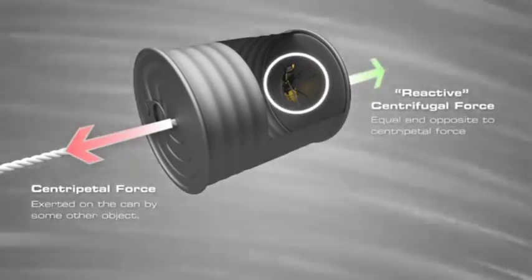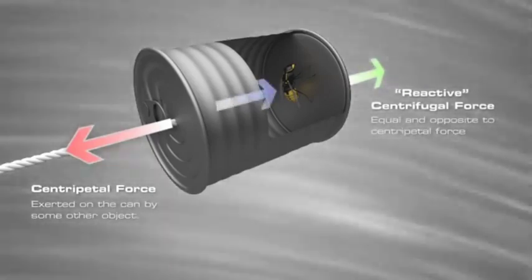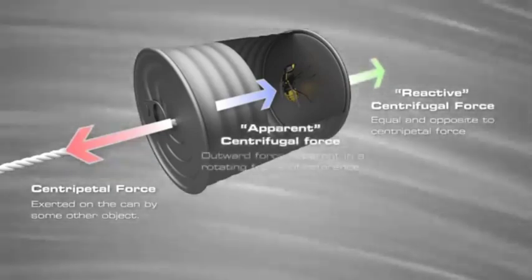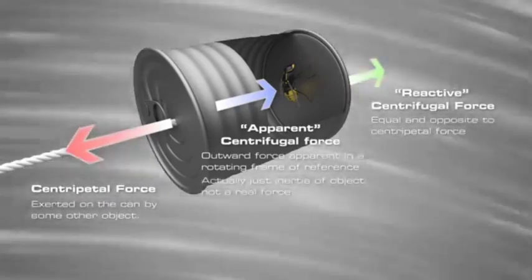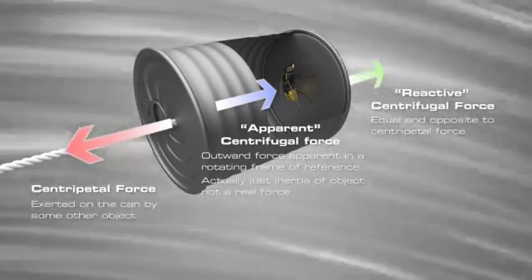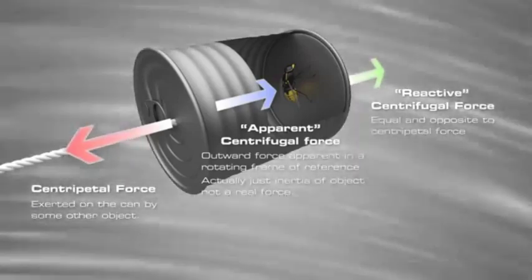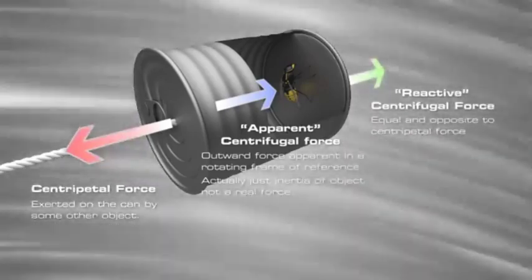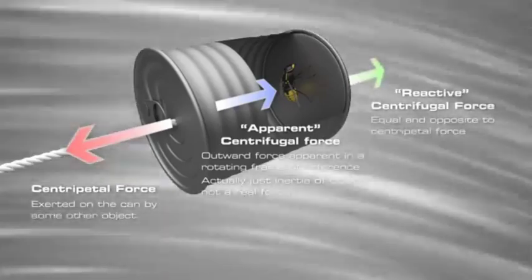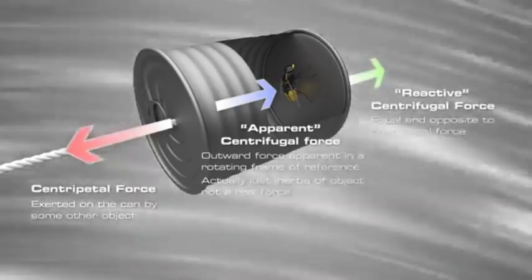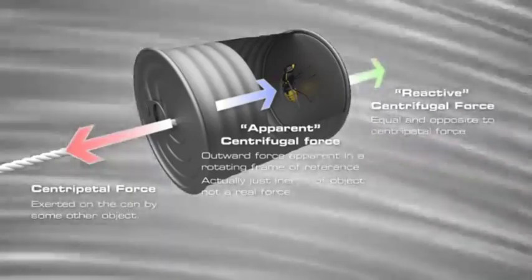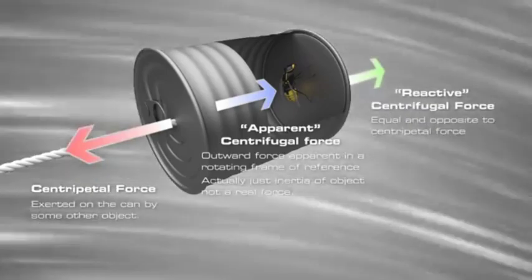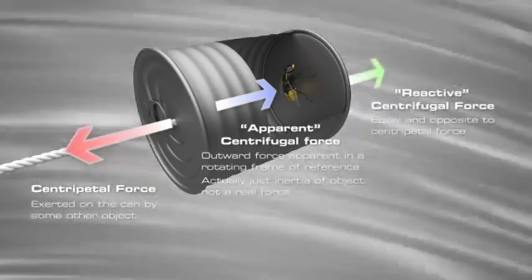If an object is placed inside the can, the object appears to have an outward force pushing it against the bottom of the can and away from the center of rotation. The apparent centrifugal force is an outward force apparent in a rotating frame of reference. It is fictitious in the sense that it is not part of an interaction but actually the object's inertia — the object naturally wants to travel in a straight line but centripetal force doesn't allow this. This type of force is associated with non-inertial reference frames and referred to as a fictitious or inertial force. The reactionary and apparent centrifugal forces are not real forces; the apparent centrifugal force is really the object's inertia.